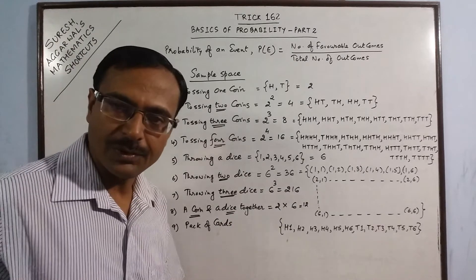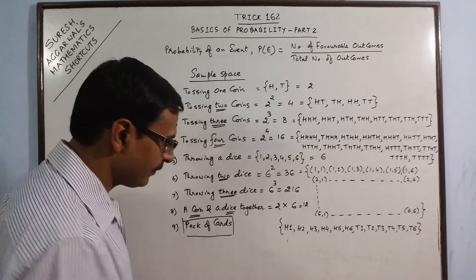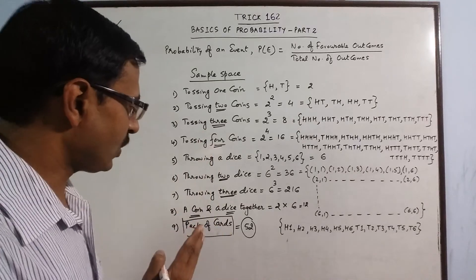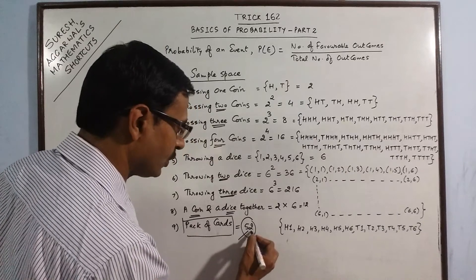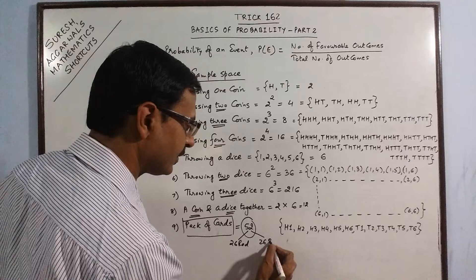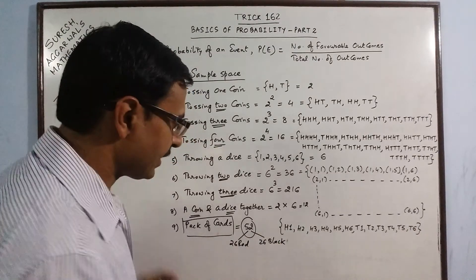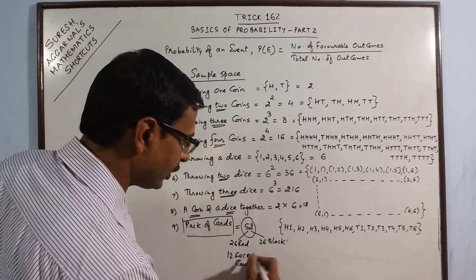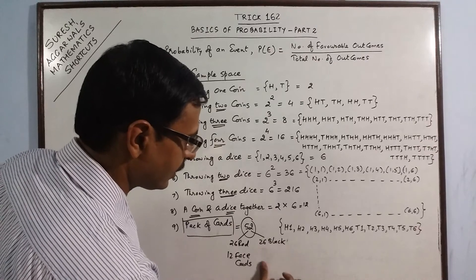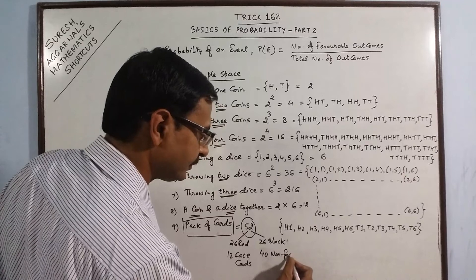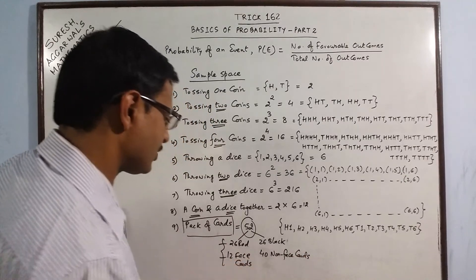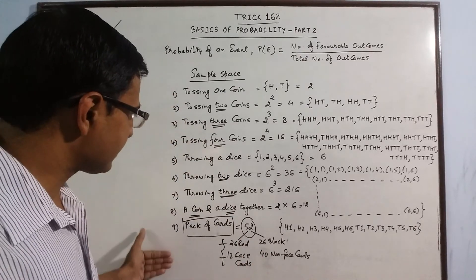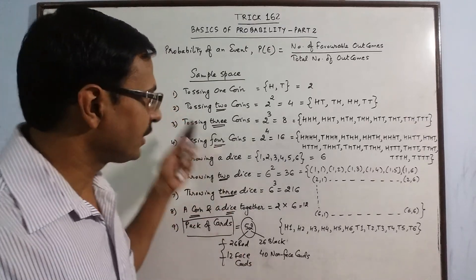Similarly, for a pack of cards — you all know that pack of cards questions are very important for probability. You have 52 cards in total, so there are 52 total possible outcomes in the sample space. These are categorized into 26 red and 26 black. One further categorization gives 12 face cards and 52 minus 12, that is 40 non-face cards. This is two types of classification of cards which we can discuss in our subsequent videos.